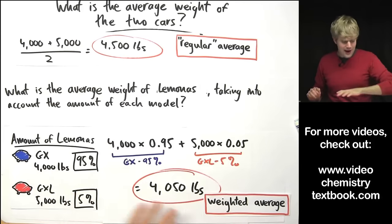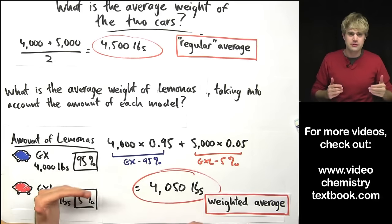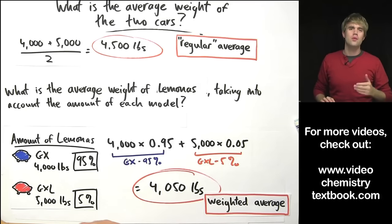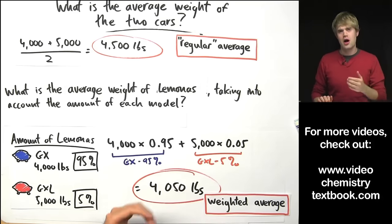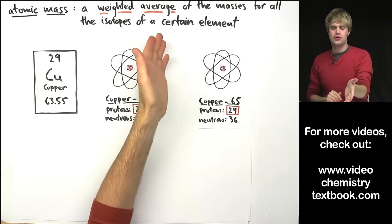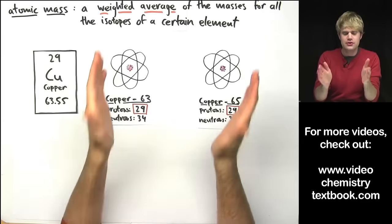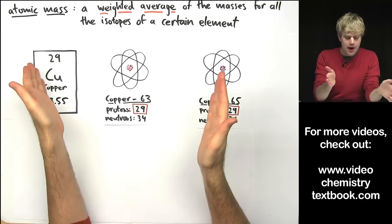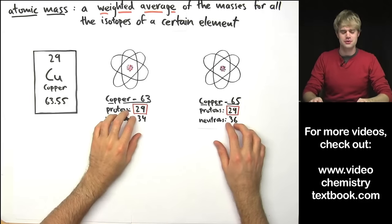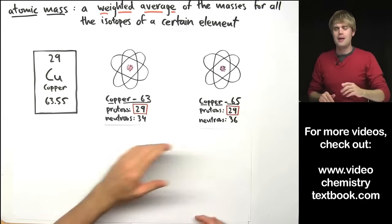So now that we've learned how to do weighted averages with different types of cars let's talk about how to do weighted averages with different isotopes of an element. So the atomic mass is a weighted average of the masses for all the isotopes of a certain element. Copper, as we said earlier, has two versions or two models, copper-63 and copper-65.